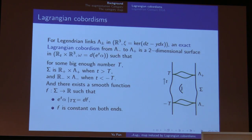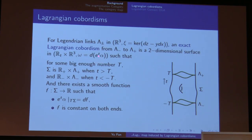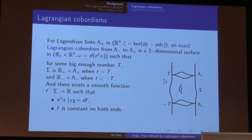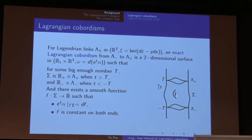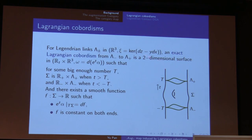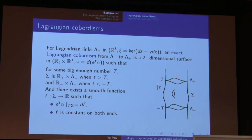During this talk, I'll focus on ℝ³ with a standard contact structure. A cobordism happens in the symplectization of ℝ³, which is one dimension up with the two-form d(eᵗα), where α is the standard contact structure dz − y dx. As you can see in this picture, the vertical direction is t, and each horizontal slice is an ℝ³. We have two Legendrian knots in ℝ³ sitting inside different levels: λ₊ sitting inside the higher level and λ₋ sitting inside the lower level. A Lagrangian cobordism is a two-dimensional surface that is cylindrical over λ₊ on the top, cylindrical over λ₋ on the bottom, and compact in the middle.